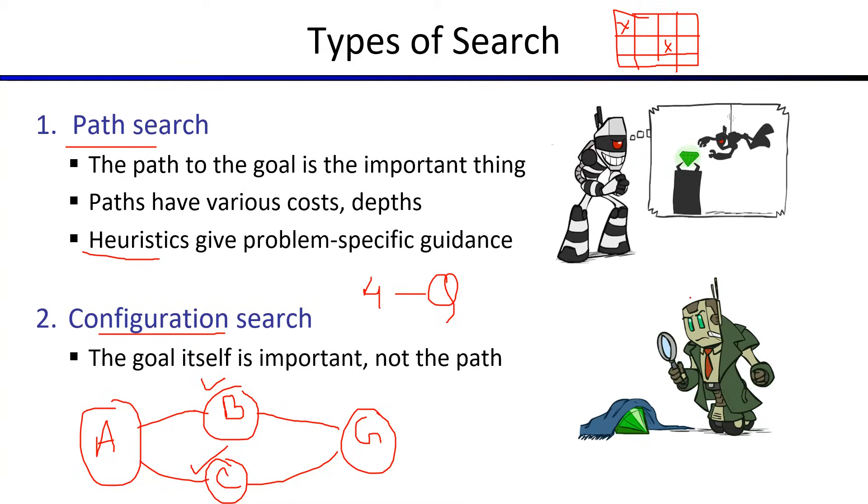And the police wants to get back the diamond, so he is looking for the diamond. This time, how the police reaches the diamond is not important. Rather, what matters is whether he can find the diamond or not. So this is a configuration search example.